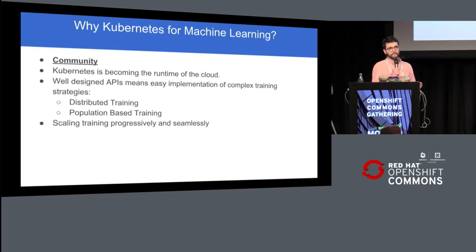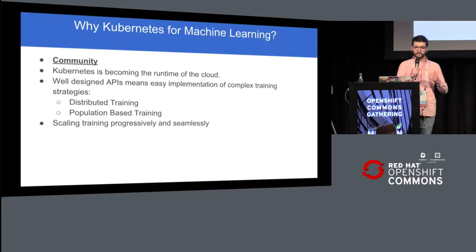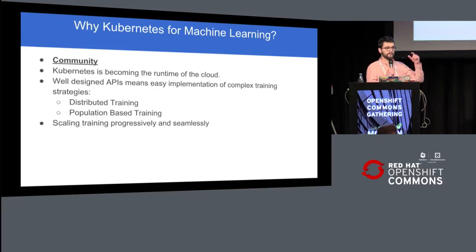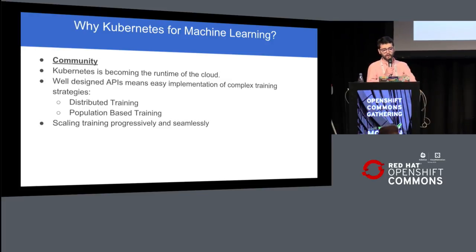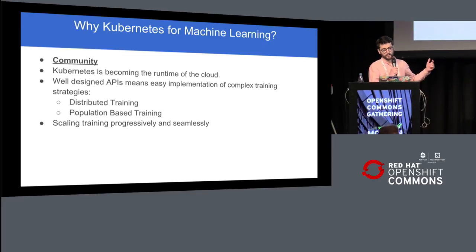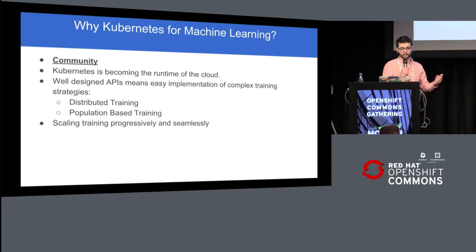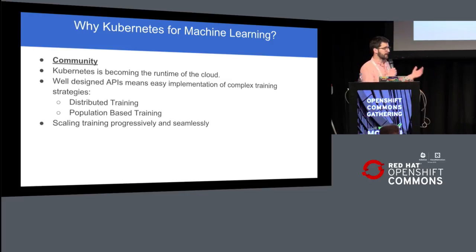Kubernetes also has really well-designed and clean APIs. So even if you don't find what you want and need to start from scratch, it's actually much easier to do that on Kubernetes than it was just a few years ago. For example, I worked on population-based training — which comes from DeepMind originally — with a large customer, and to implement that on Kubernetes it just took a few days. The APIs are really nice. And obviously, scaling is important — Kubernetes scales pretty largely.